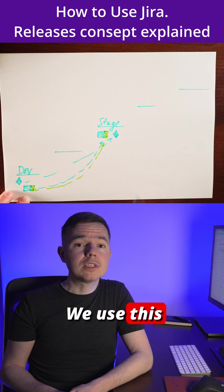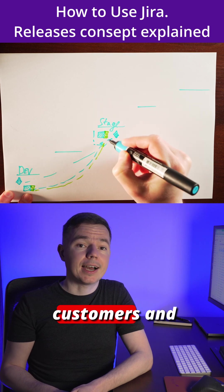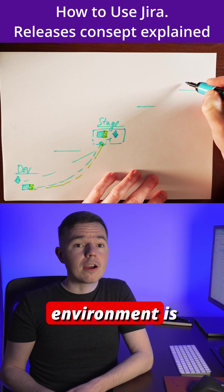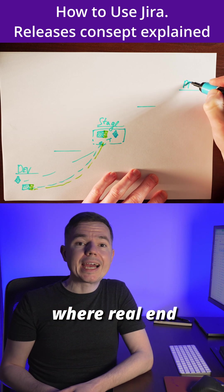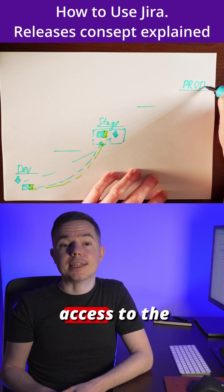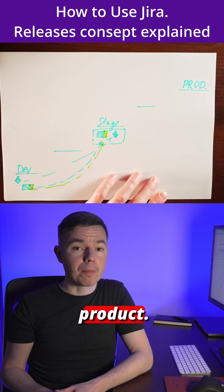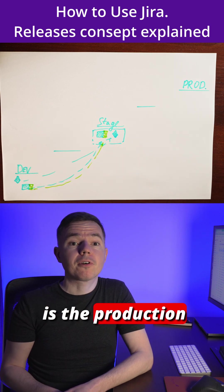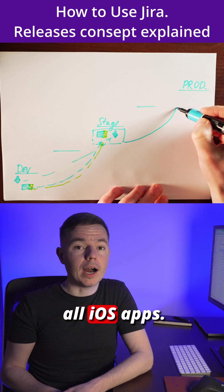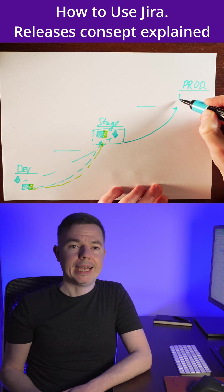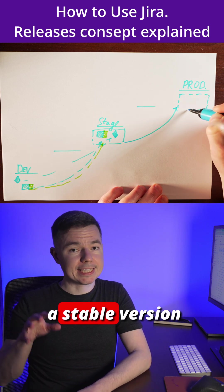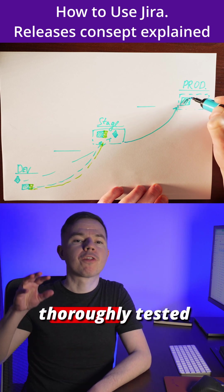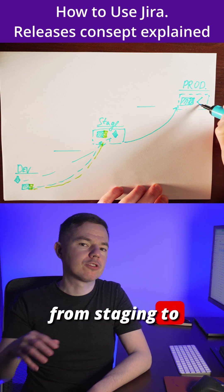This way we keep the staging environment stable until we develop another big piece of functionality to promote. We use this version to present to customers and other stakeholders. The production environment is where real end users have direct access to the product — for example, the Apple App Store is the production environment for all iOS apps. And again, we promote a stable, thoroughly tested version from staging to production.